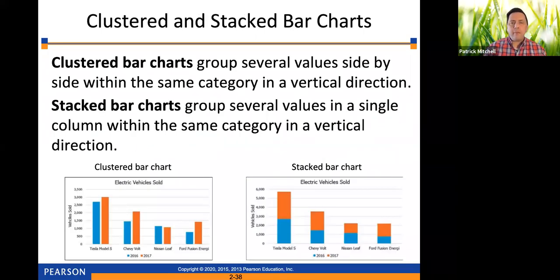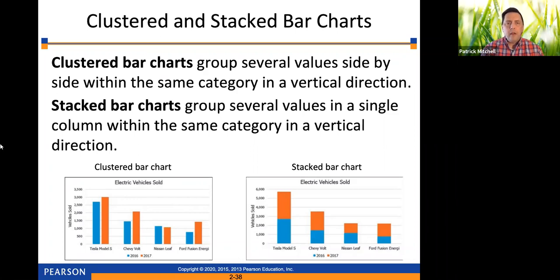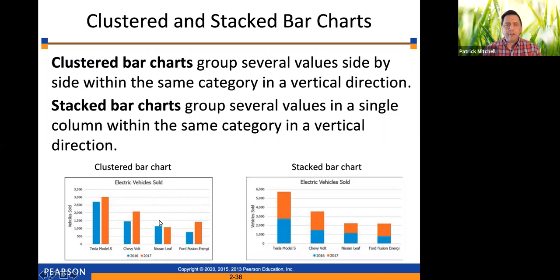Here are a couple of other kinds of bar charts. Clustered bar charts group several values side by side within the same category in a vertical direction. As an example, they show electric vehicles sold in 2016 and 2017. The whole point is so somebody can look at this in just a few seconds and get the idea of the trends in electric vehicles sold.